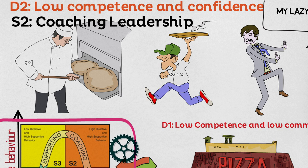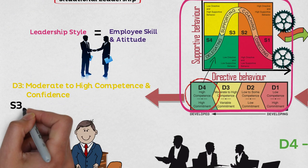Selling — S2: this style involves more back and forth between leaders and followers. Leaders sell their ideas and message to get group members to buy into the process. Employees at this stage ask a lot of questions, and there is a great deal of both one-way and two-way communication between the supervisor and the employee. In my pizza store example, this is when managers told me I was doing a good job and that if I kept it up, they would promote me to junior manager.